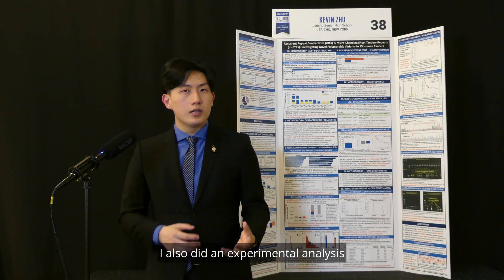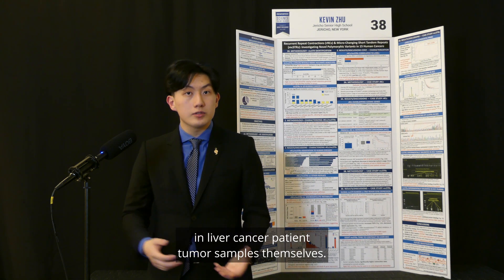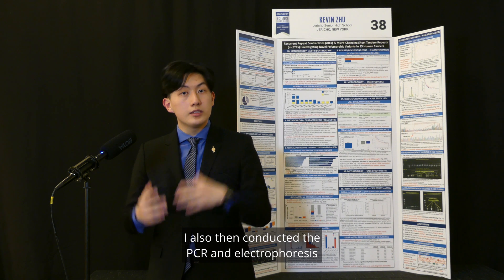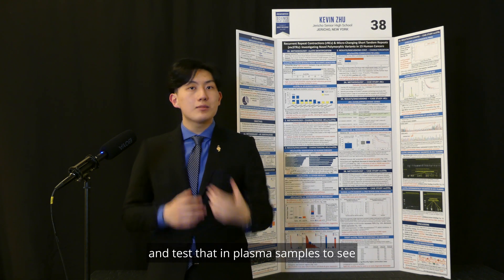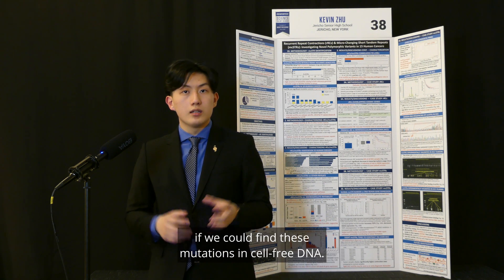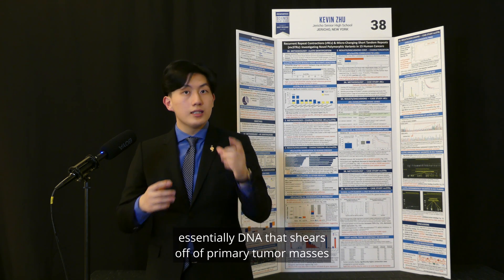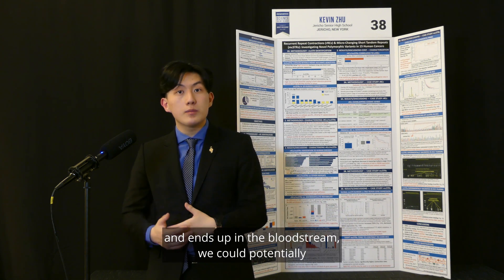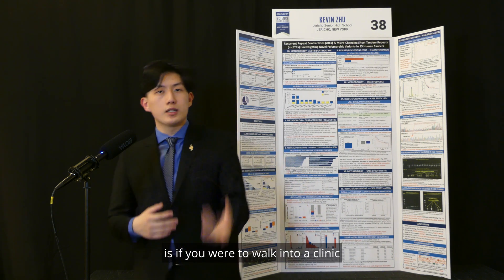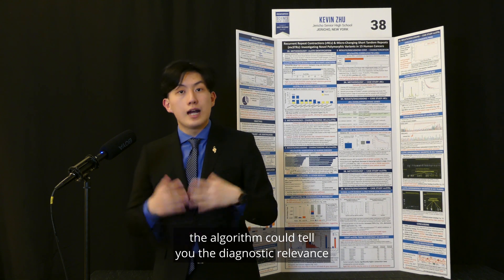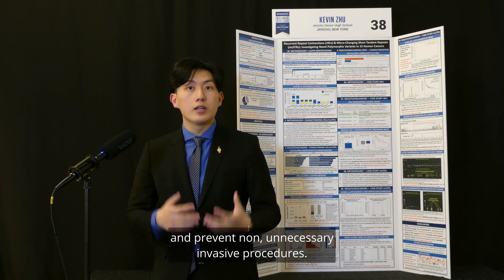I also conducted an experimental analysis using Sanger DNA sequencing to validate that these mutations actually exist in liver cancer patient tumor samples. I then conducted PCR and electrophoresis by designing specific primers that would only bind when a specific mutation is found, and tested that in plasma samples to see if we could find these mutations in cell-free DNA — DNA that shears off of primary tumor masses and ends up in the bloodstream. The idea is that if you were to walk into a clinic, get a blood draw, and have that sequenced, the algorithm could tell you the diagnostic relevance or potential that you may have cancer, preventing unnecessary invasive biopsy procedures.